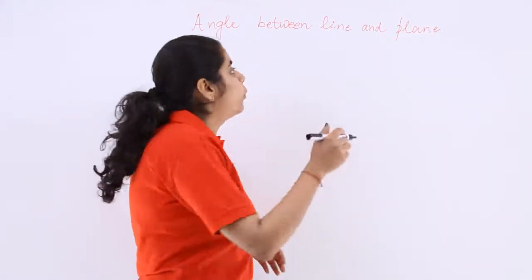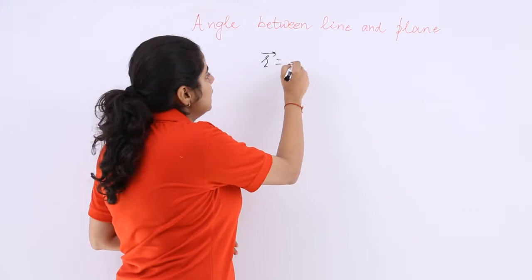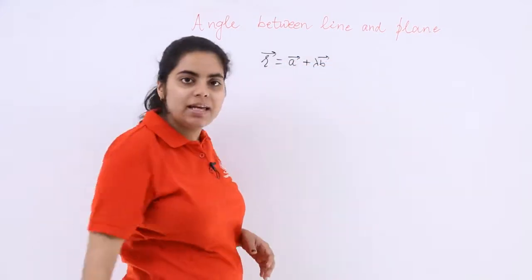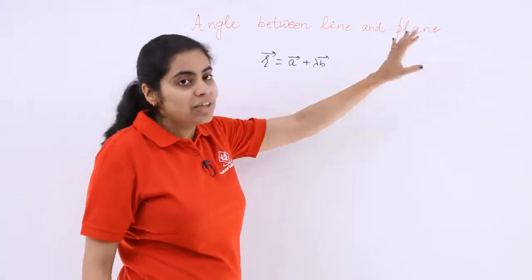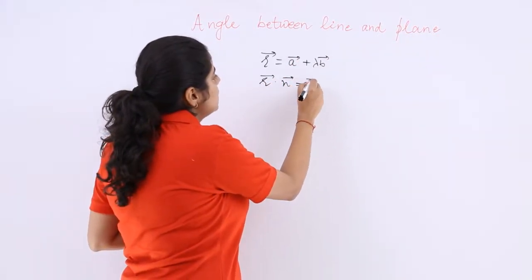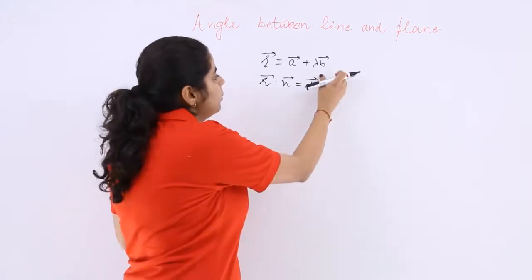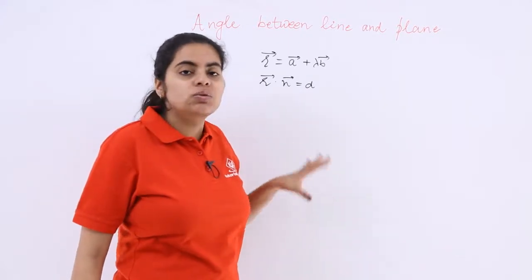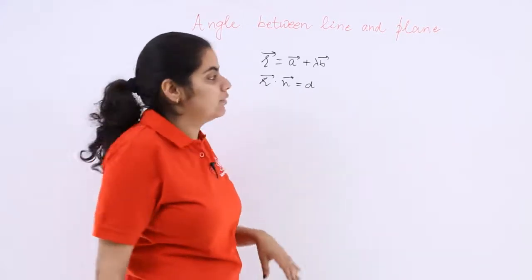We have vector equation of a line as r equals a plus lambda b where lambda is a scalar. We also have equation of a plane which is r dot n vector equals d, where d is the distance. So these are the two things which have been given.